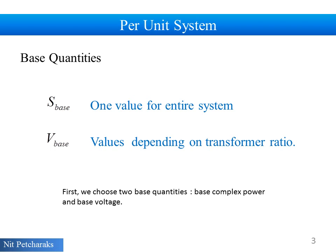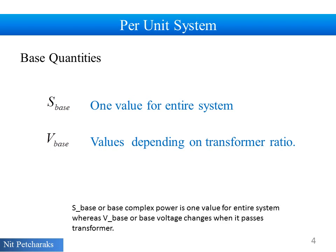First, we choose two base quantities: base complex power and base voltage. S_base or base complex power is one value for entire system, whereas V_base or base voltage changes when it passes transformer.